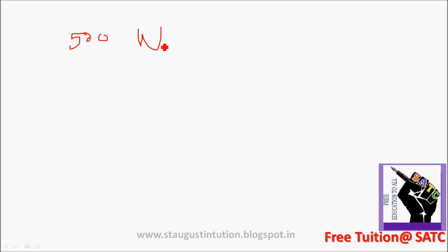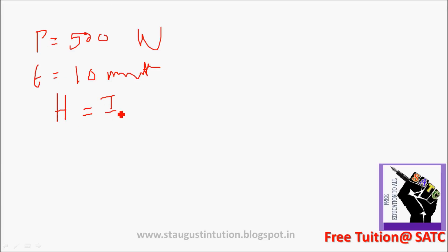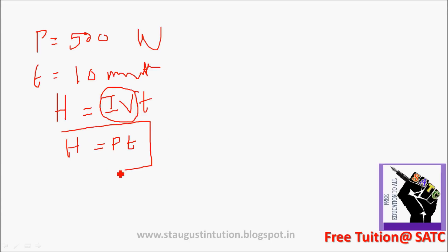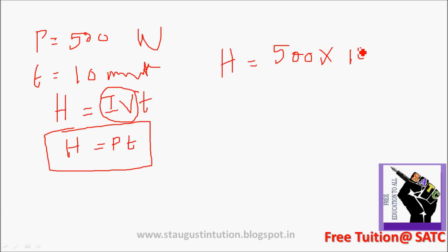We know that power is equal to IV and that heat is equal to power into T. Then heat is equal to 80 into time. Time is equal to 10 minutes. Then heat is equal to 60. The total answer is 3, 1, 2, 3, 4, 5 J.